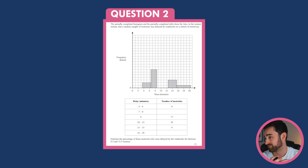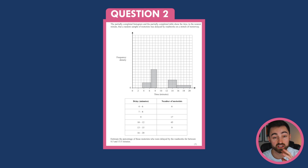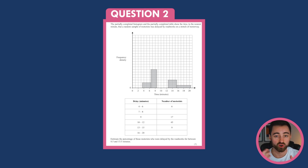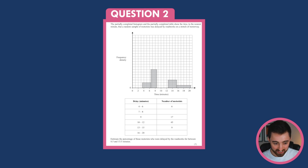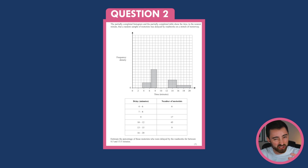Question 2. The partially completed histogram and partially completed table show the time to the nearest minute that a random sample of motorists was delayed by roadworks on a stretch of motorway. We've got a histogram not fully completed and a table. The question asks us to estimate the percentage of these motorists who were delayed by the roadworks for between 8.5 and 13.5 minutes. This would be quite easy if they weren't partially completed, so let's try to fully complete them first.